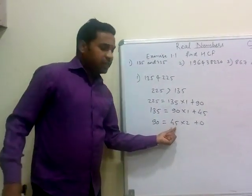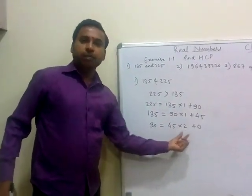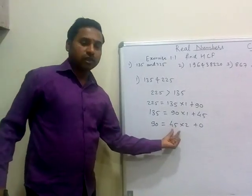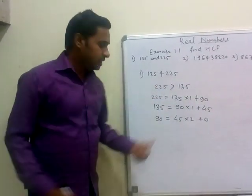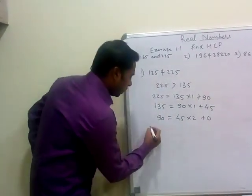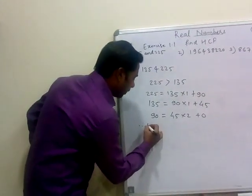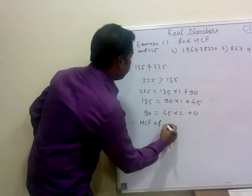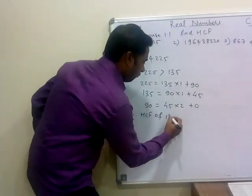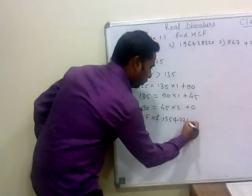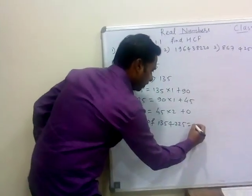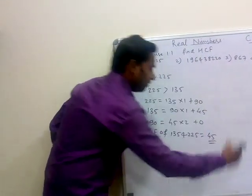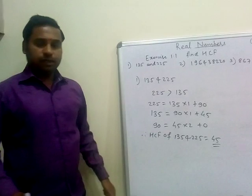Now I have 45 and 2. From these two I can clearly identify that 45 is my HCF. So therefore, HCF of 135 and 225 is equal to 45.